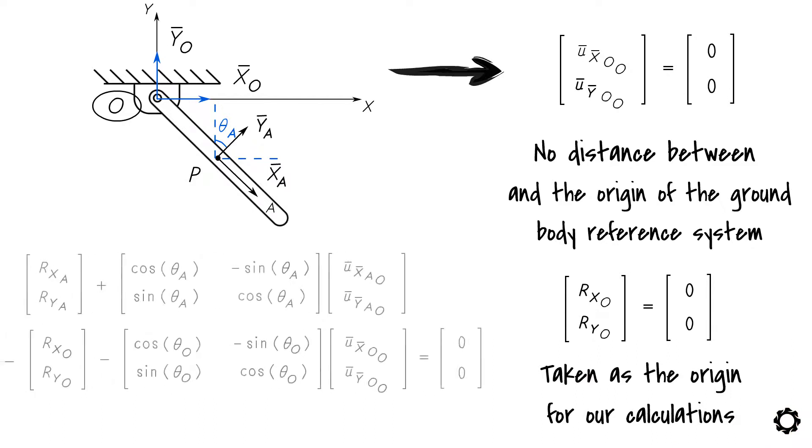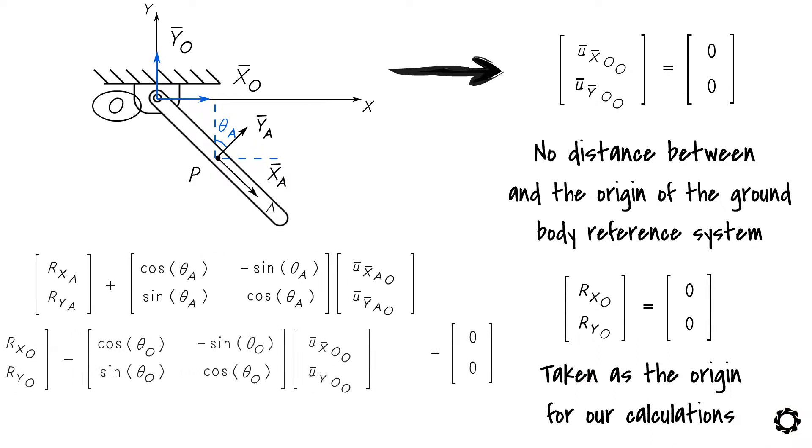Then our constraint equation vector transforms into [Rx_A, Ry_A] plus [[cos(theta_A), -sin(theta_A)], [sin(theta_A), cos(theta_A)]] times [U_bar_X_AO, U_bar_Y_AO] equals [0, 0].